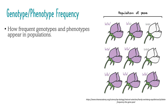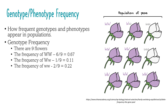Genotype and phenotype frequencies can also be calculated and are important for understanding how populations evolve, but they are not the same thing as allele frequency. To calculate the genotypic frequency, we look at the homozygous dominant, homozygous recessive, and heterozygous alleles. From the example, there are a total of 9 flowers: 6 have homozygous dominant alleles (WW), 2 have homozygous recessive alleles (ww), and 1 has a heterozygous allele.